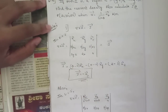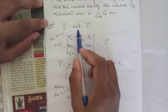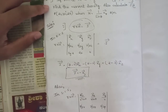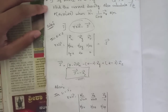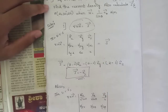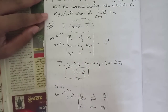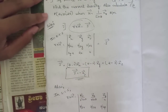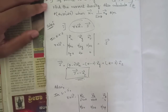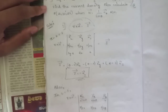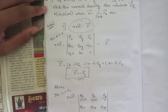The relation between current density and magnetic field intensity is ∇×H = J, derived from Ampere's Law. For a detailed video on Ampere's Law in point/differential form, refer to our playlist — it may be appearing in the top right of your screen.